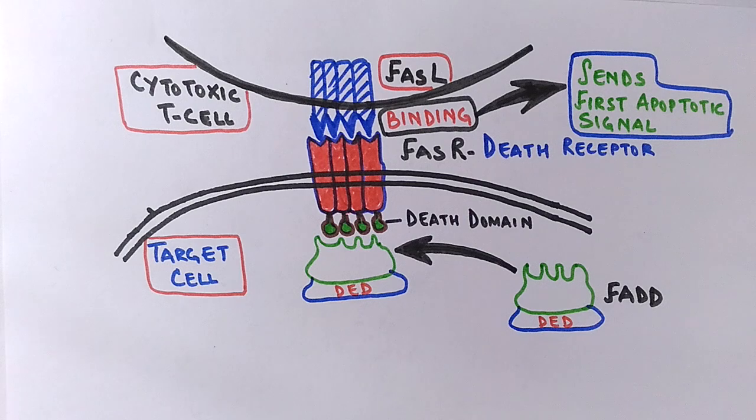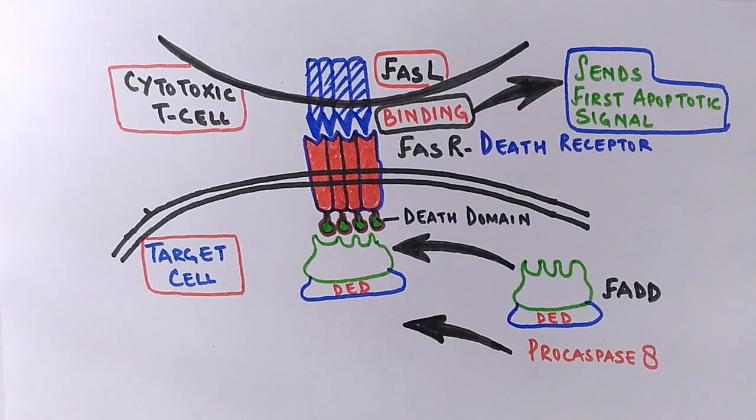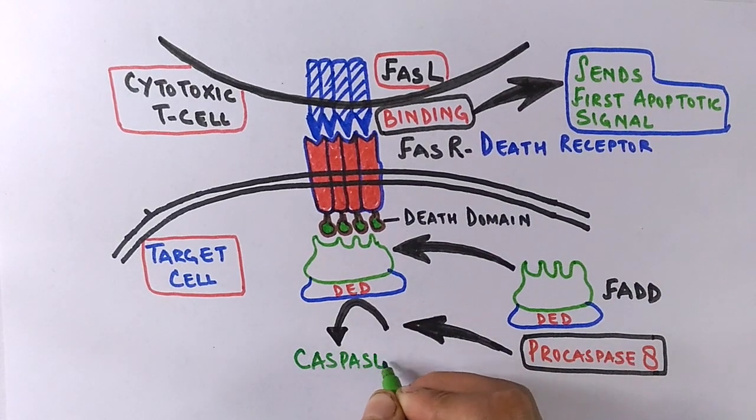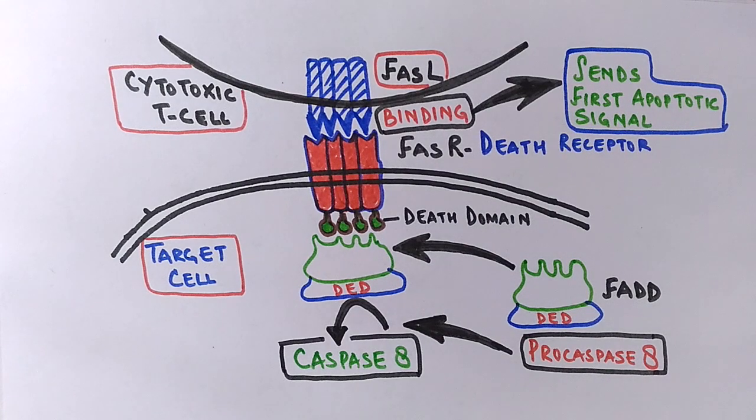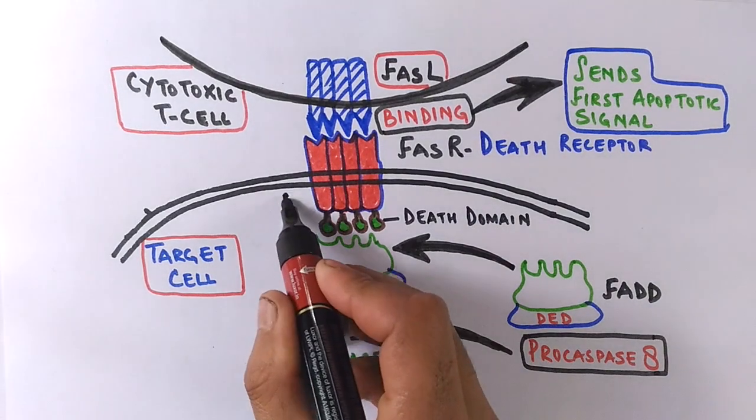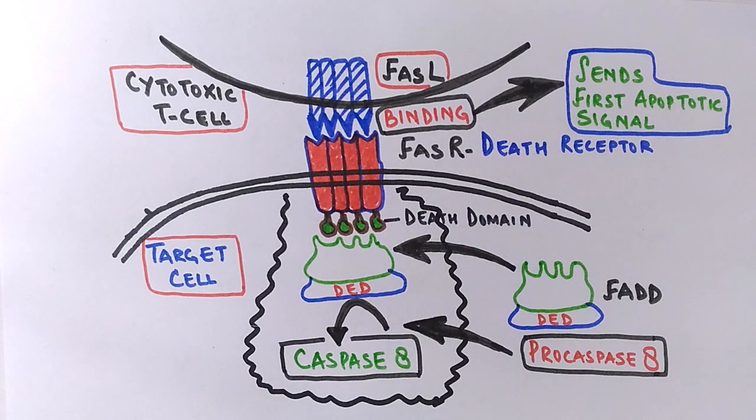The death effector domain of FAD molecule further recruits a molecule called procaspase 8, which gets activated into its active form, that's caspase 8. Finally we have a bunch of molecules existing together: that's activated FAS receptor, FAD adapter molecule, its unmasked death effector domain, and a caspase 8 enzyme.